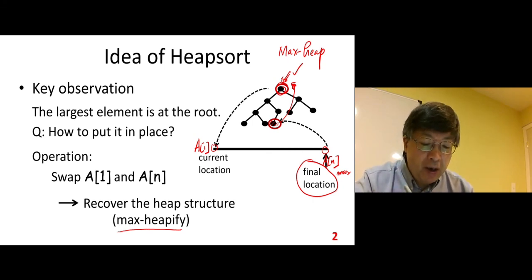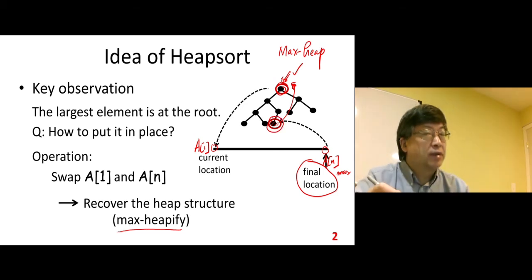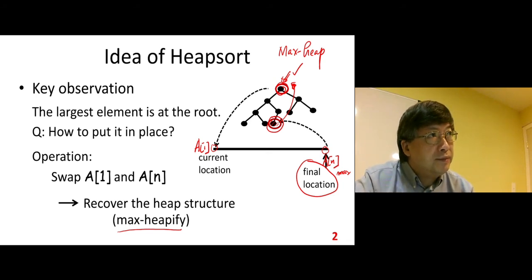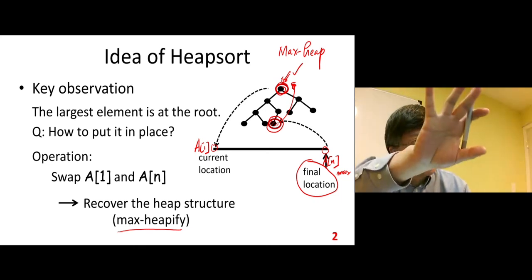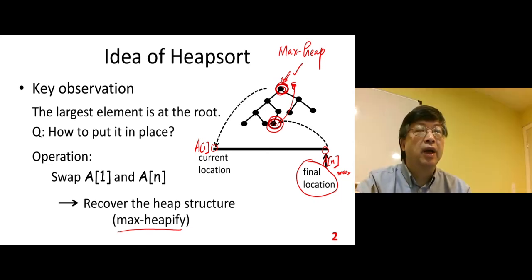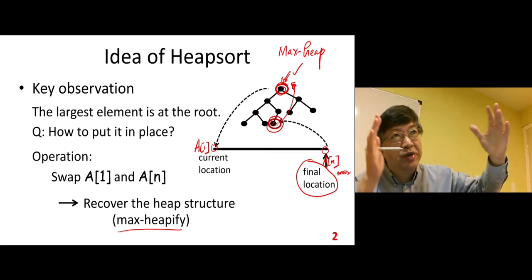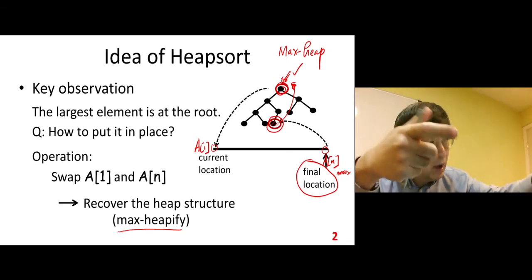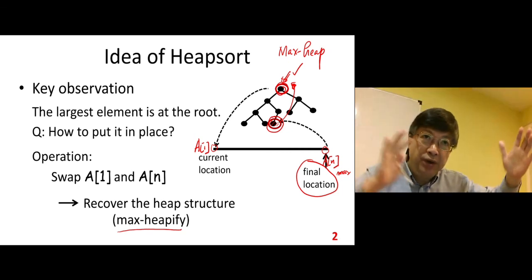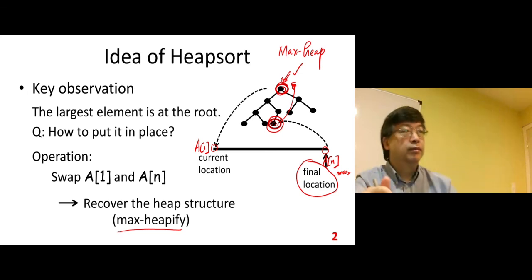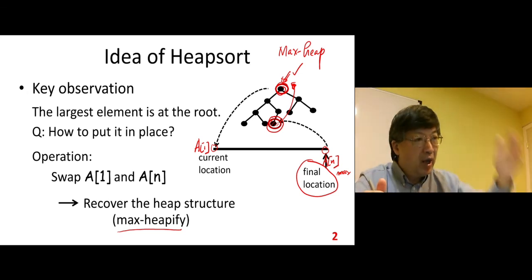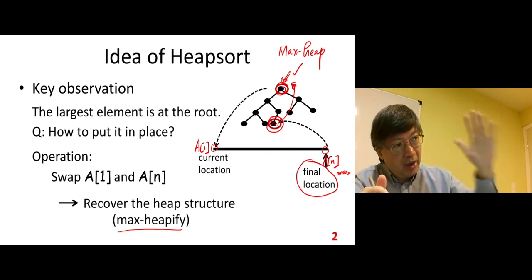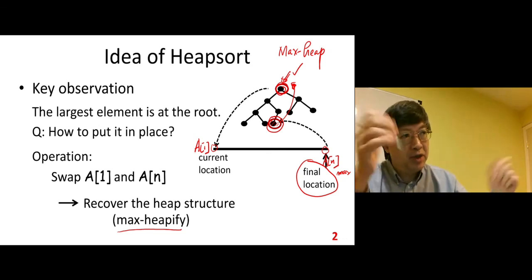In this new heap, we do not include the elements that are already in place, because they're already in place — why would we need to include them? We do not touch all the elements that are already in place. So here you can see we reduce the heap size by one element. Every time when we put one element in place, we reduce the heap size by one. At the end, we reduce the heap until we put all the elements in place.